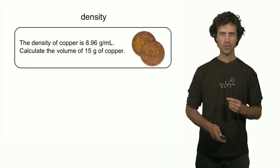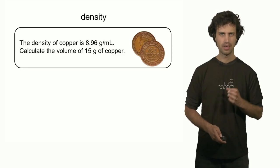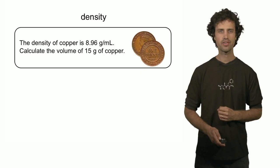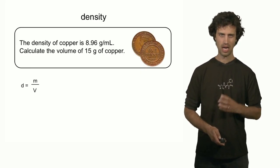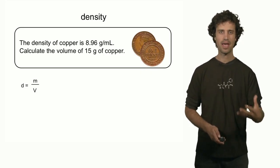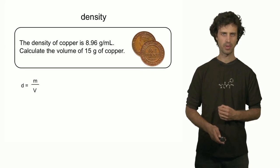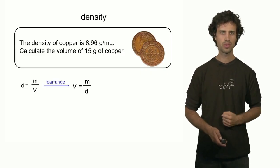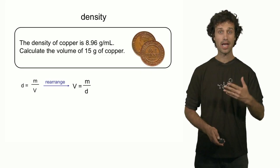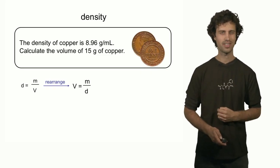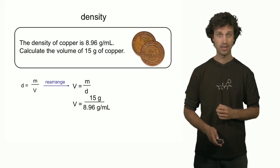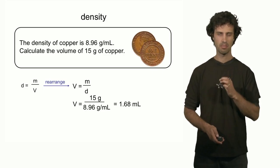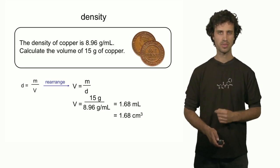Let's do a quick exercise with the unit of density. The density of copper is 8.96 grams per milliliter. Let us calculate the volume of 15 grams of copper. Density is defined as mass over volume, but since we need to calculate volume, we rearrange: volume equals mass over density. Substituting the values, we get 15 grams divided by 8.96 grams per milliliter, which equals 1.68 milliliter, or 1.68 centimeter cubed.